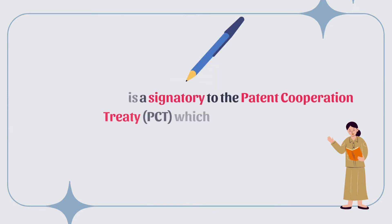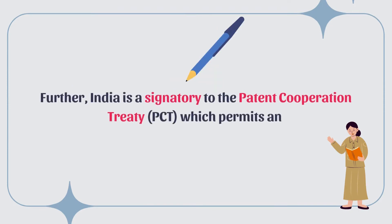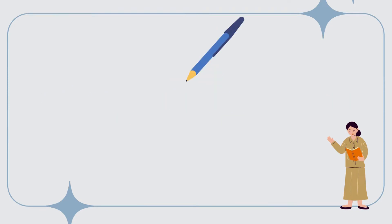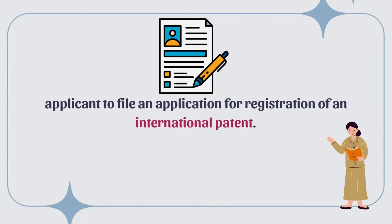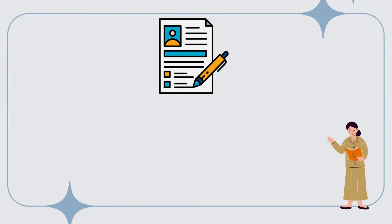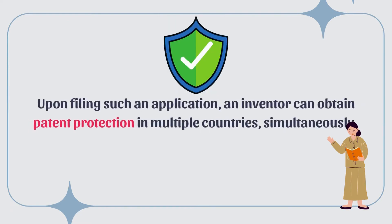Under the Patents Act, with respect to a patent for a product, the right is to prevent third parties from using, selling, making, or importing the product without prior consent of the original inventor. Further, India is a signatory to the Patent Cooperation Treaty, which permits an applicant to file an application for registration of an international patent, allowing an inventor to obtain patent protection in multiple countries simultaneously.